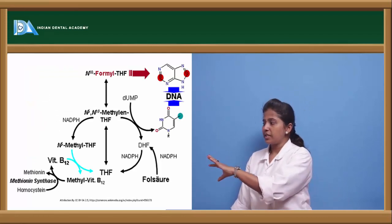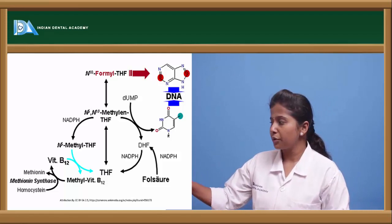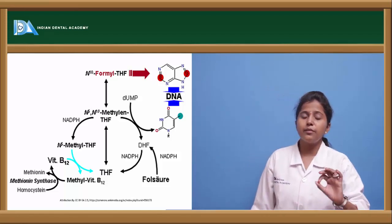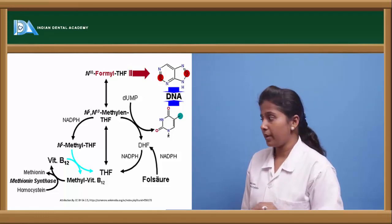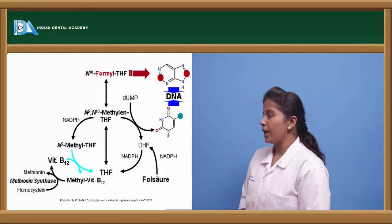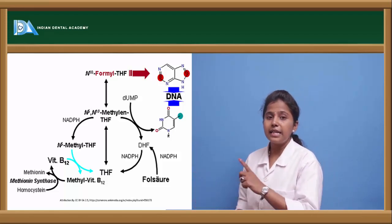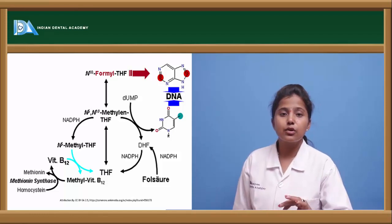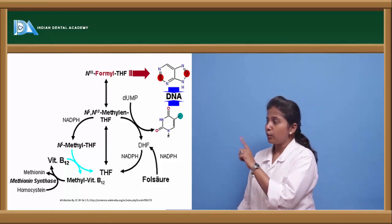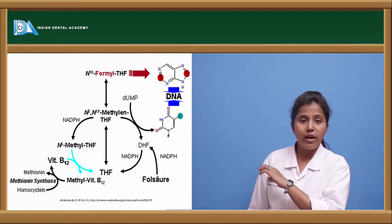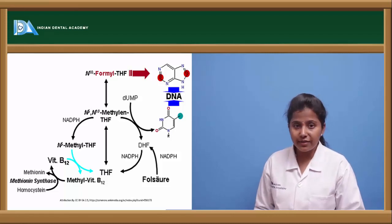This is the pictorial representation. We saw homocysteine converting to methionine via methionine synthase, aided by vitamin B12. Along with vitamin B12, folic acid also plays a very important role. We can see that folic acid aids in the inhibition of DNA synthesis in red blood cells, thereby promoting the production of RBC.